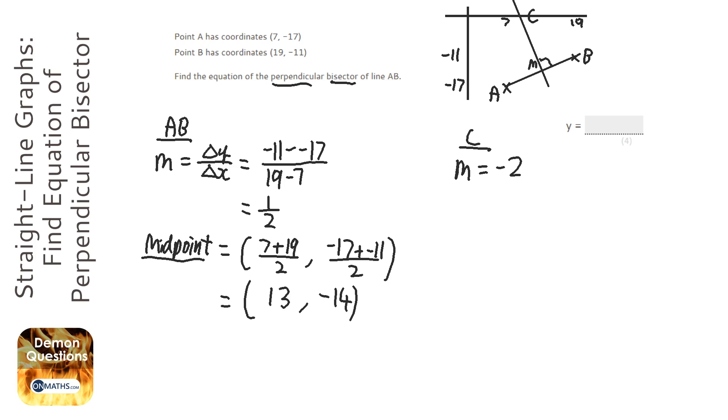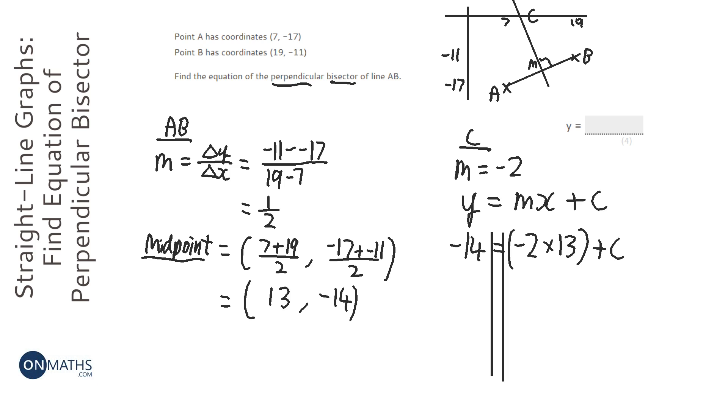So we've got the gradient. Now, we know that the formula for the equation of line C is y equals mx plus c. We actually know the gradient, and we know a point on that line, which was the midpoint of line AB. So, we're going to feed in the coordinates, so it's minus 14 equals the gradient, minus 2, times the x-coordinate, which was 13, plus c. And we just solve this to find out what c is. So, minus 14 equals minus 26 plus c. I'm going to add 26 both sides, so it's going to be 12 equals c, or c equals 12. So, therefore, the equation is, in the form y equals mx plus c, it's going to be y equals minus 2x plus 12.